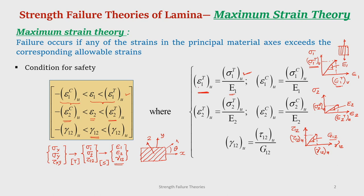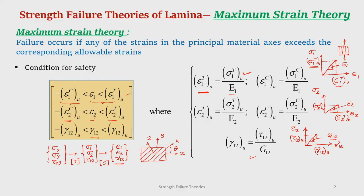We obtain the allowable strains in direction 1, direction 2, and the shear strain in plane 1-2. These are the conditions for safety. Like maximum stress theory, here also there are five criteria: one when epsilon 1 is tensile, second when epsilon 1 is compressive, third when epsilon 2 is tensile, fourth when epsilon 2 is compressive, and the fifth for shear. Though it is called maximum strain theory, there are five sub-criteria similar to maximum stress theory.